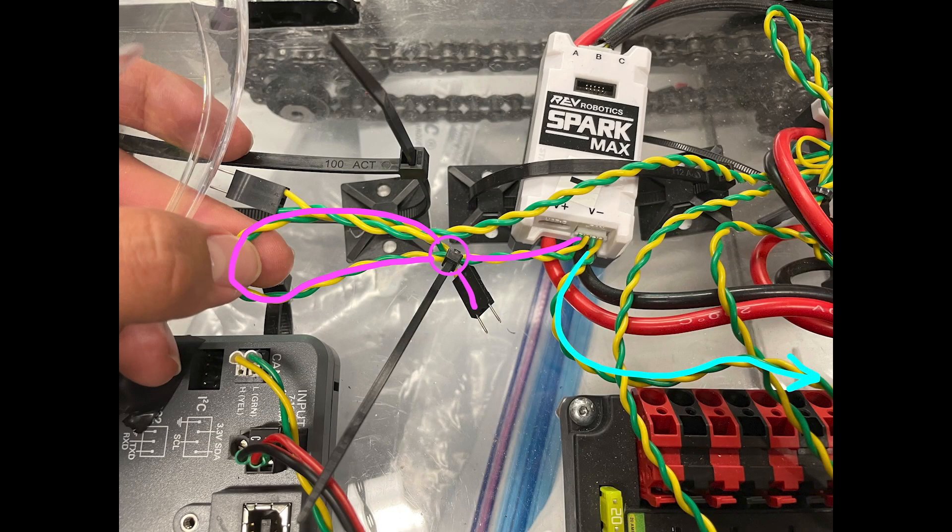Now, one thing that's important to acknowledge is that some of the devices that you may be using on your CAN bus, such as a Spark Max motor controller, for example, as you see in this image, come manufactured with two CAN wire leads baked into them. Even though in this case, we're only using one of them to attach that Spark Max to the central trunk of our CAN bus.